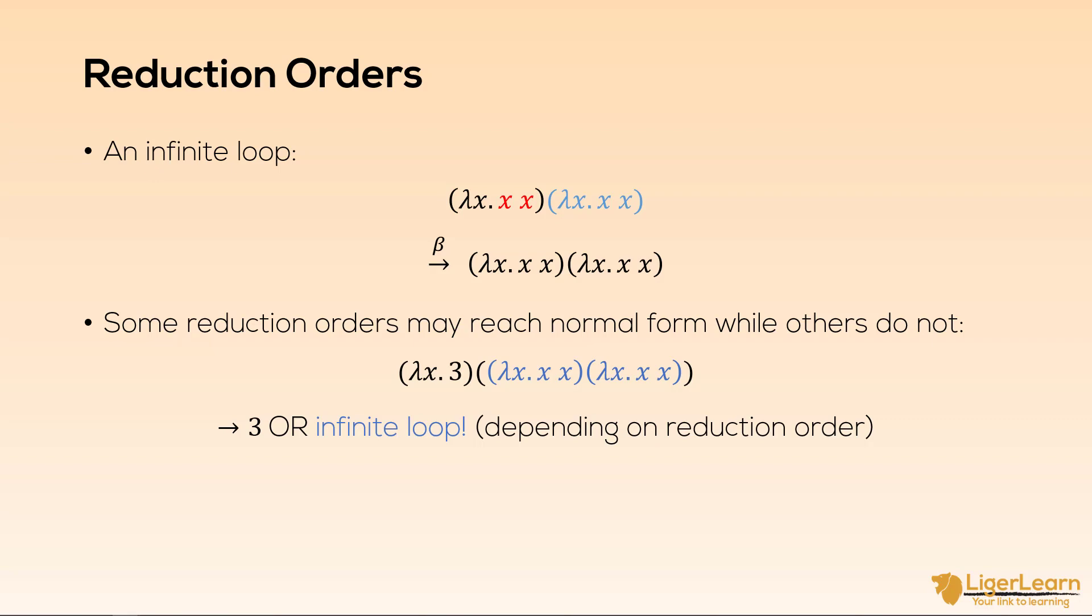But in general, if we imagine a real problem which could consist of potentially billions or trillions of expressions, we cannot know whether an expression has a normal form. It is said to be undecidable. Another question we have is can two different reduction order sequences lead to different normal forms? The short answer, fortunately, is no. But that leads us onto our next topic, the Church-Rosser theorems.